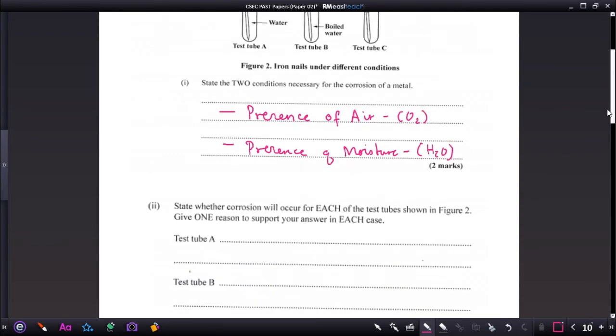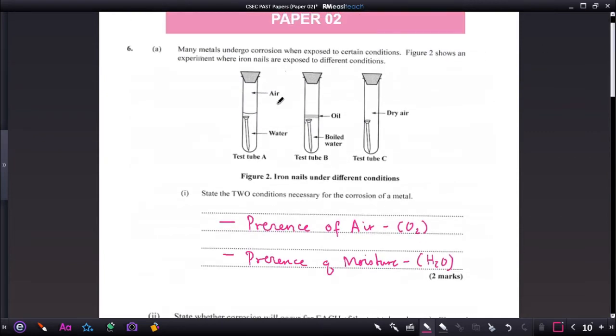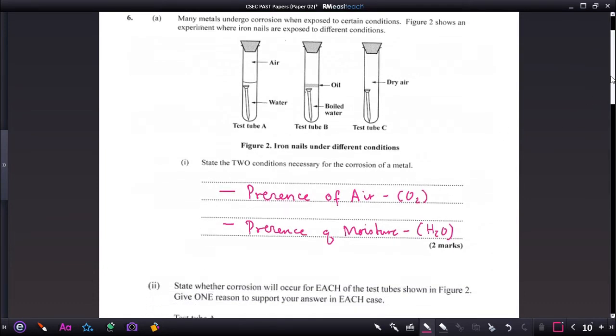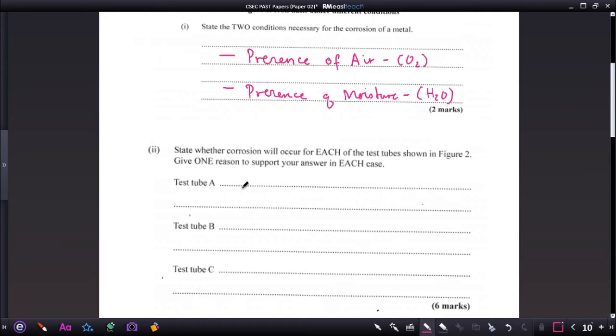Part 2. State whether corrosion will occur for each of the test tubes shown in figure 2. Give one reason to support your answer in each case. Test tube A, it has oxygen, it has air and it has water. So we expect test tube A to corrode. Will undergo corrosion. Test tube A. Why? In test tube A, the nail is surrounded by air and water.